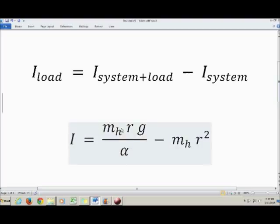So m_h stands for the mass of the hanger, so the hanging mass. R stands for the radius of that step pulley on the underside of the platter. G is the acceleration due to gravity. This is m_h and r again, same definitions as before. And down here is the angular acceleration, which you're going to be getting from the computer program.